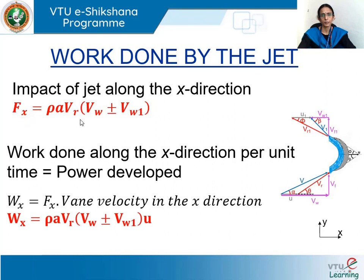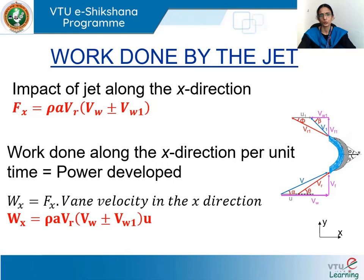Now that we have the expression for the force along x, let us find the work done by the jet on the vane. Since the vane moves at u meters per second, work done by the jet per unit time — or power developed — along the x direction is Wx = Fx × u = ρA·vr × (vw ± vw1) × u.